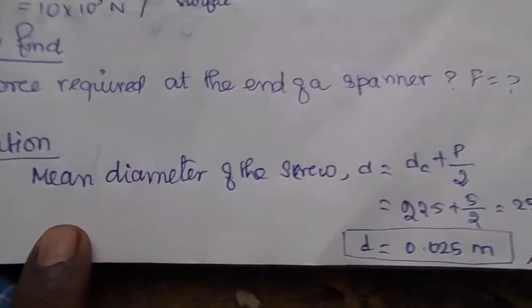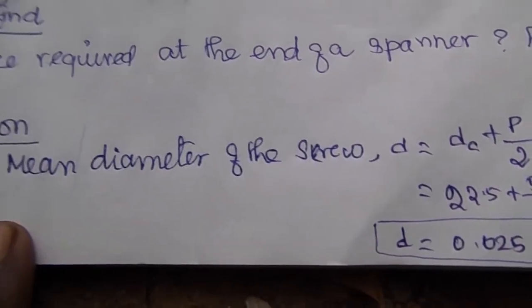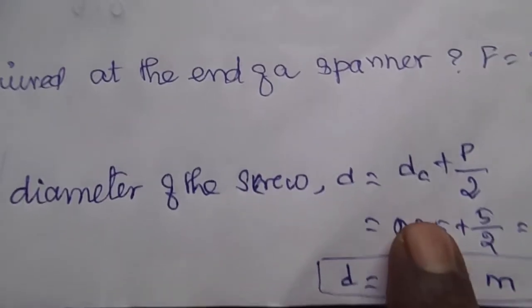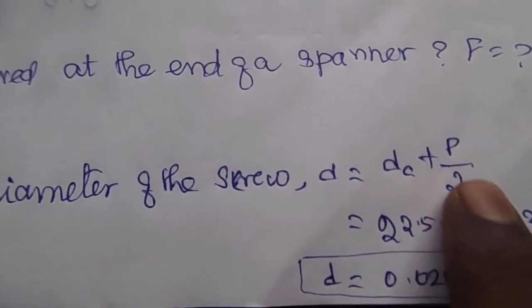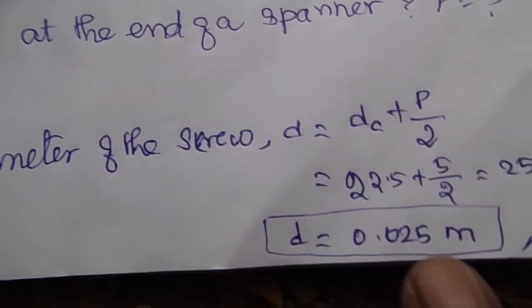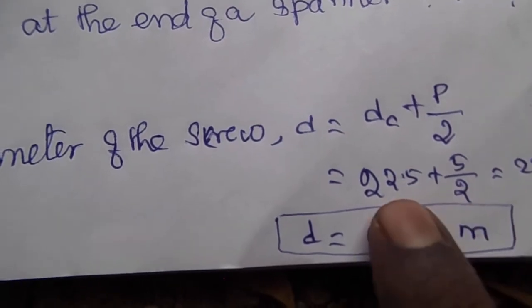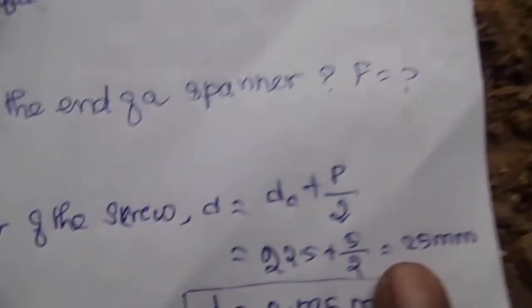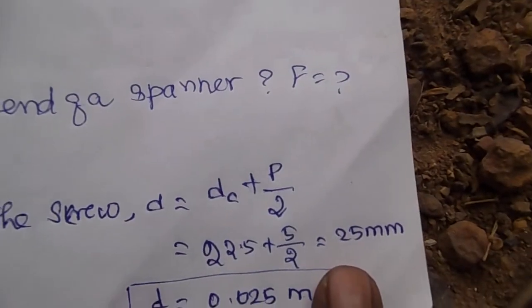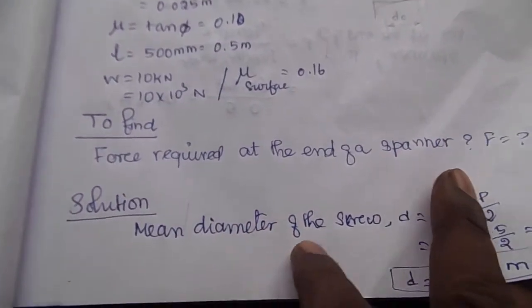First of all, we can find the mean diameter of the screw. The formula is: mean diameter D equals core diameter plus pitch divided by 2. The pitch is 5 mm. So, 22.5 plus 5 divided by 2 equals 25 mm. That is the mean diameter of the screw.